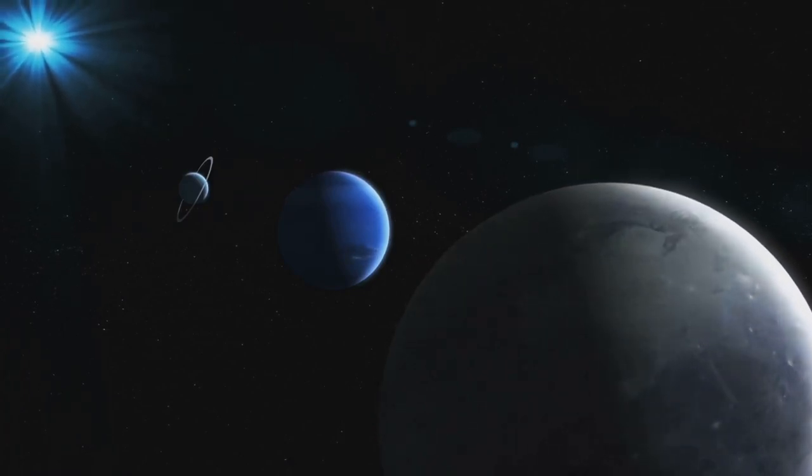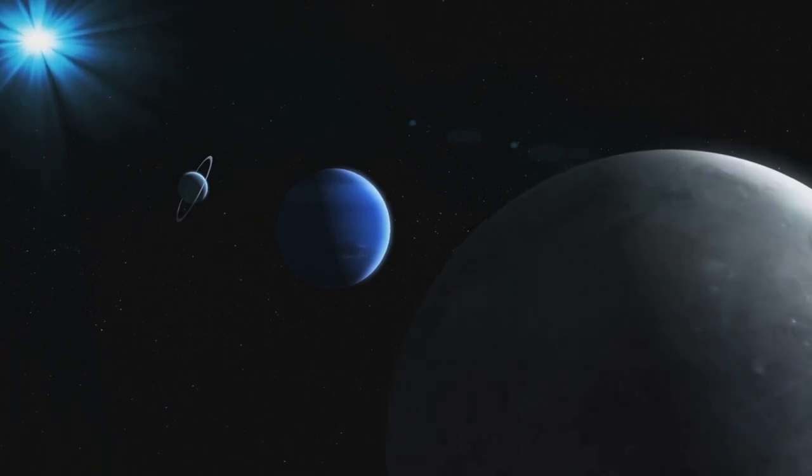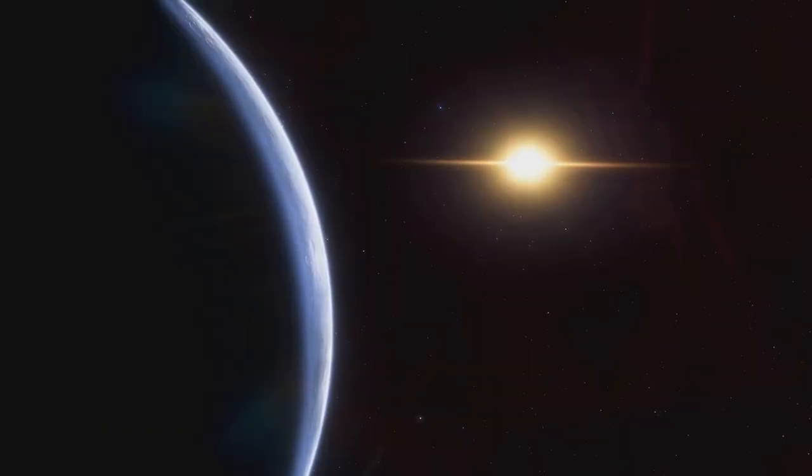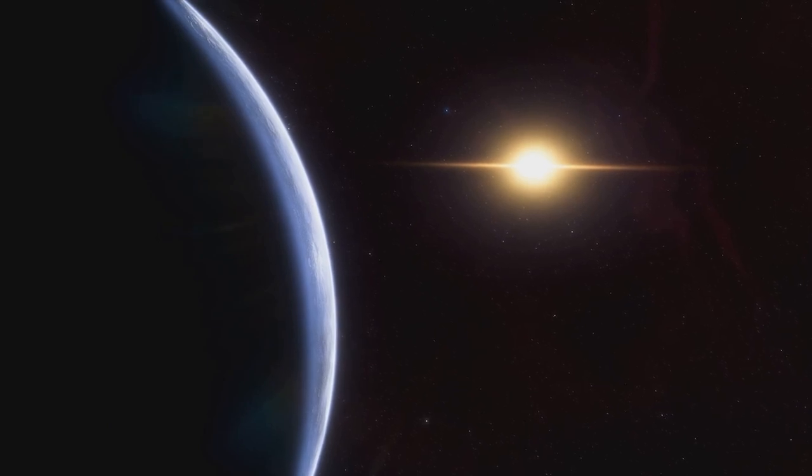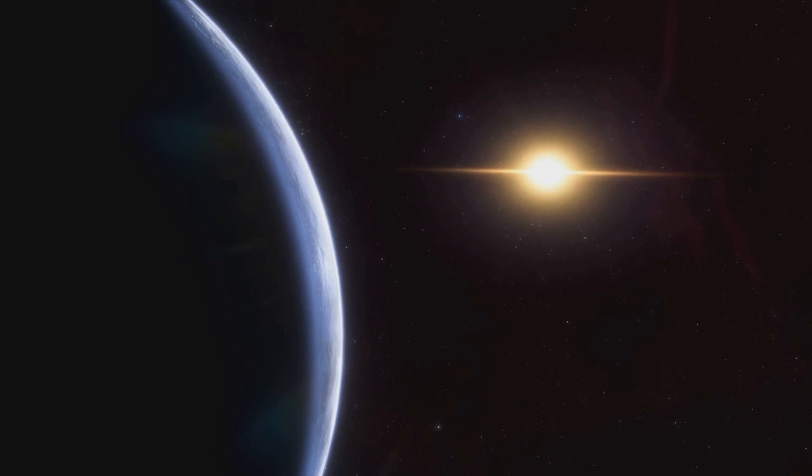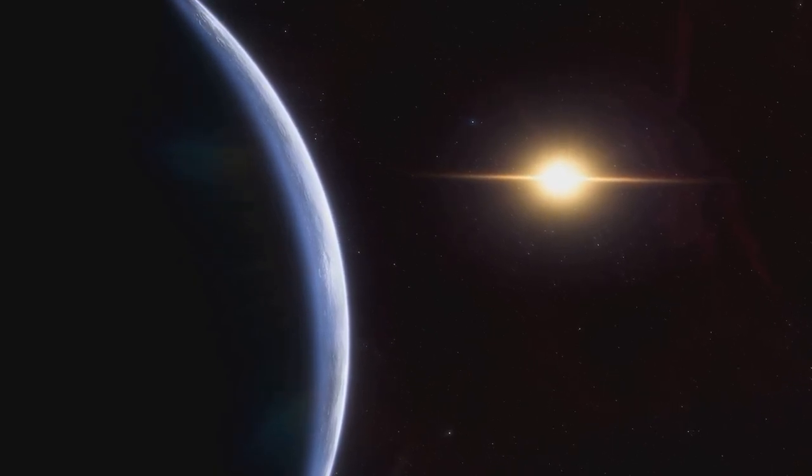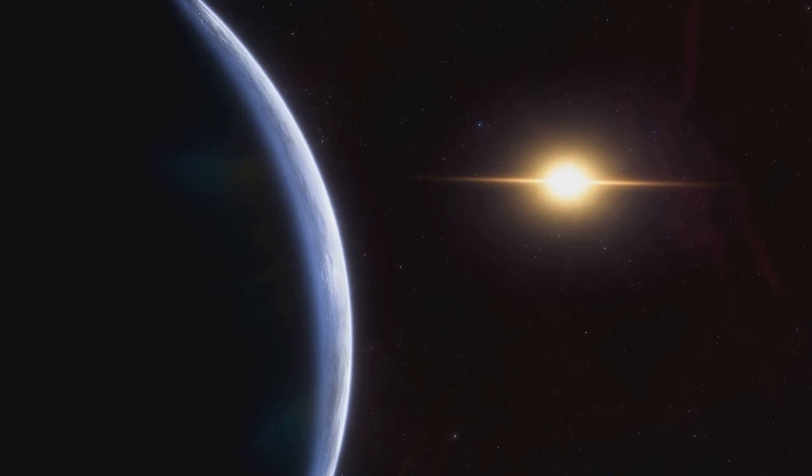Firstly, there's Proxima Centauri b, the closest exoplanet to us. Located in the Alpha Centauri star system, it lies just over four light-years away from us. This intriguing exoplanet, approximately 1.27 times the size of Earth, orbits its star in just 11.2 Earth days.